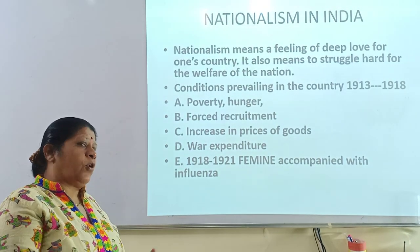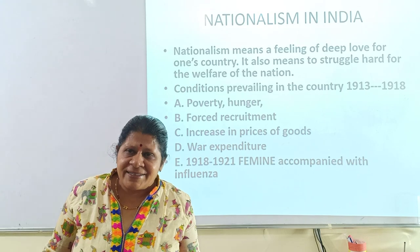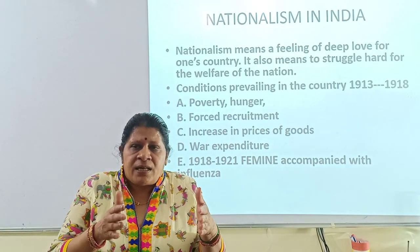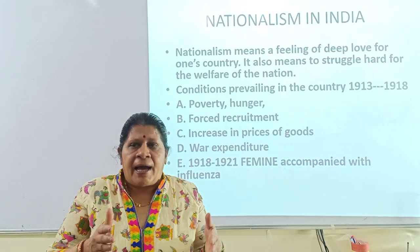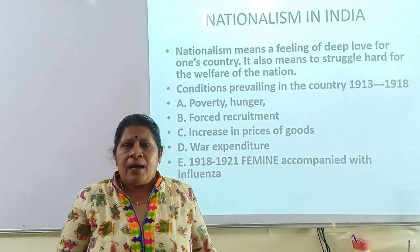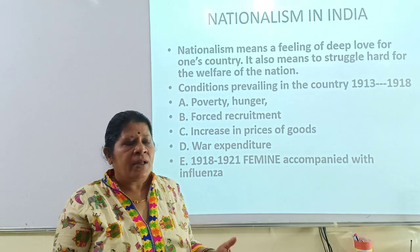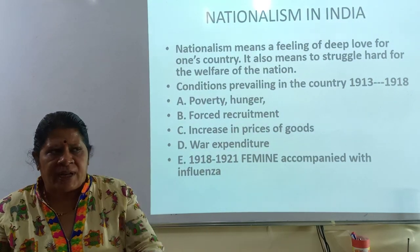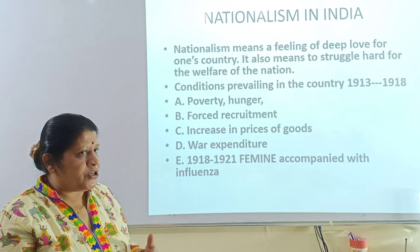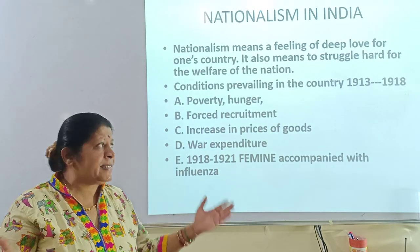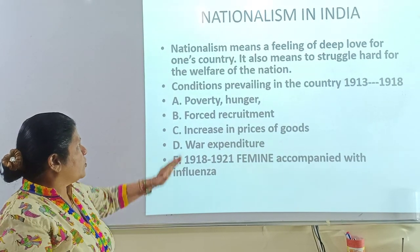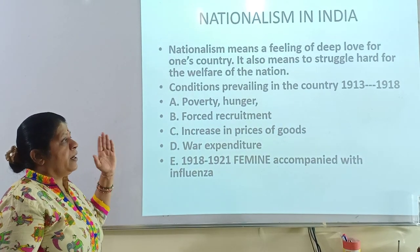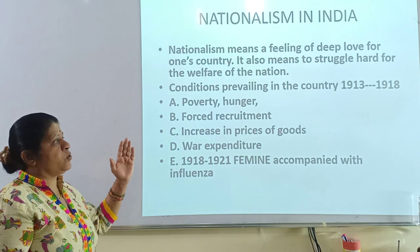Now the question arises: why is this chapter being done here when we have already done it in Class 8? The reason is that in Class 8 we just did a brief introduction of the coming of Gandhiji, the Civil Disobedience Movement, and India gaining independence. But here we are going to go into more detail. These are the factors which were prevailing at that point of time, between the years 1913 to 1918.